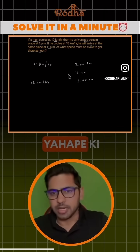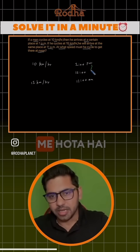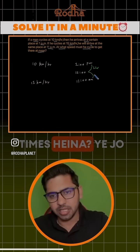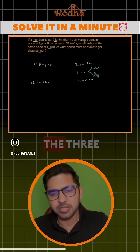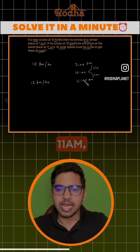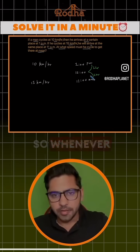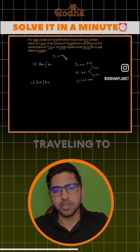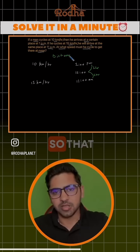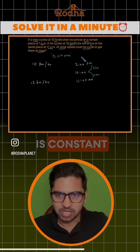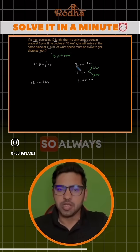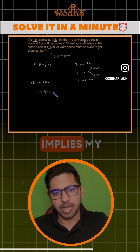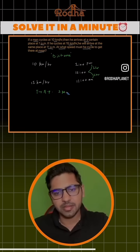Now there's a very good concept here: whenever the time is in AP — why is this in AP? Because there's a gap of one hour between all the times: 1 p.m., 12 p.m., and 11 a.m. So whenever the distance is constant and time is in AP, always remember the speed is in HP. When time is in AP, speed is always in HP.